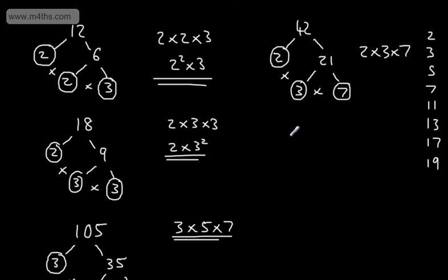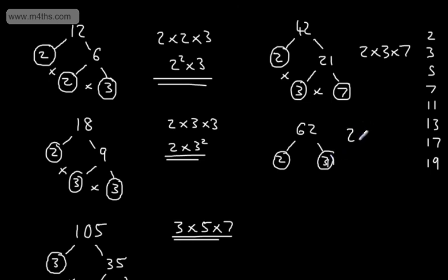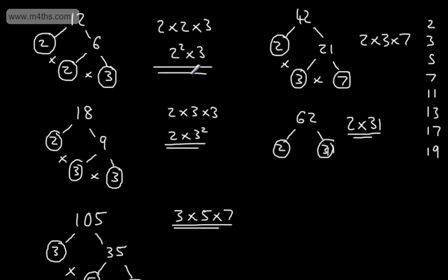Let's look at 62. Can I divide this by 2? Yes, and that leaves me 31. 31 is a prime number — if we continued our list, we would have seen that. So 62 as a product of prime factors is 2 × 31. So all we've done is use a factor tree to write a number as a product of its prime factors. With these ones, the notation is perfectly fine — so 2² × 3, or 2 × 3².